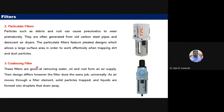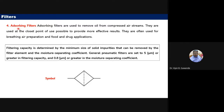The fourth type is the adsorbing filter. As the name suggests, it is used to absorb and remove oil from the compressed air stream. Adsorbing filters are used for breathing air preparation and food and drug applications. These four types of filters cover the main categories used in pneumatic systems.